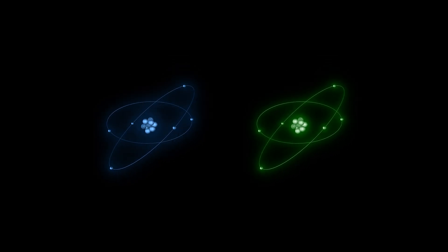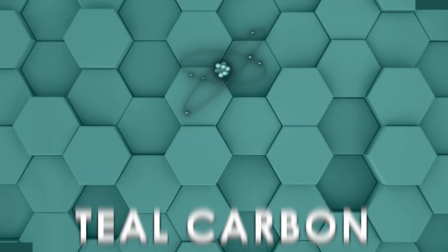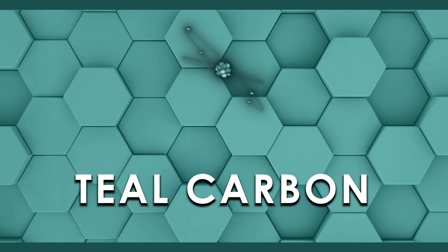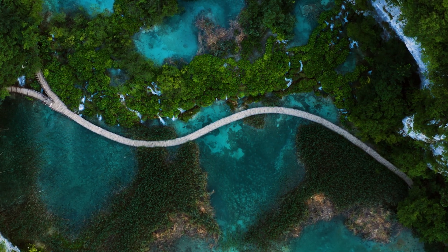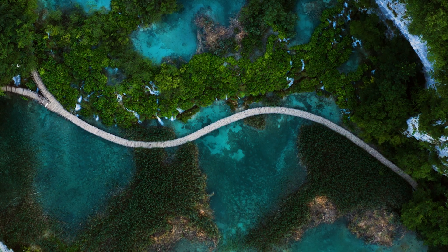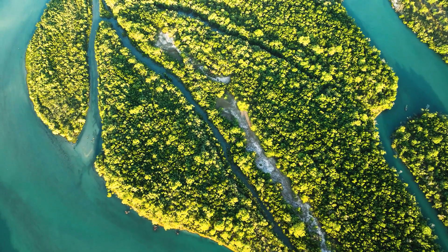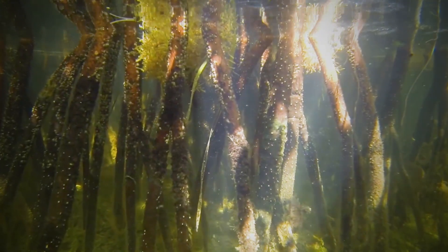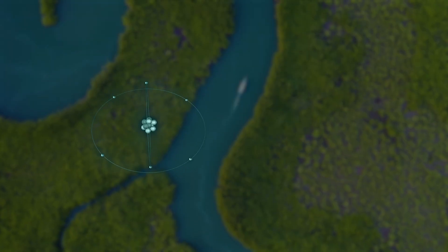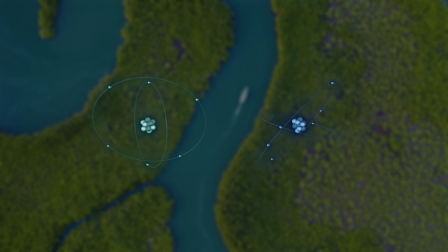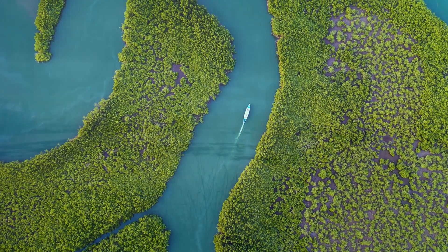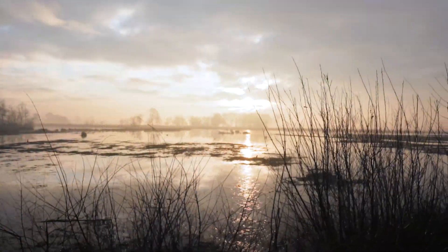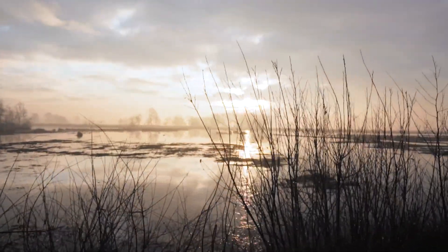In between blue carbon and green carbon, we find — shockingly — teal carbon, which is the carbon locked away in freshwater ecosystems like lakes, rivers, and wetlands. The most famous example of teal carbon would probably be mangrove forests, which form these dense webs of roots that sequester carbon deep in the soil. While teal carbon is often overlooked or grouped in with blue carbon, it represents a unique and critical component of the carbon cycle. The health and safety of our wetlands will play a vital role in keeping the climate as stable as possible.